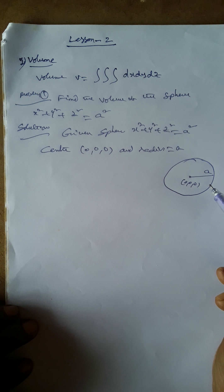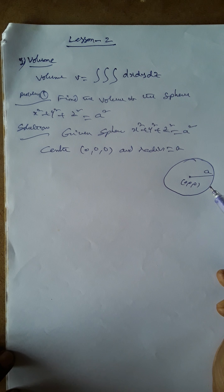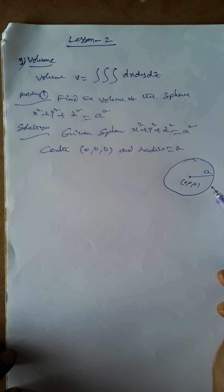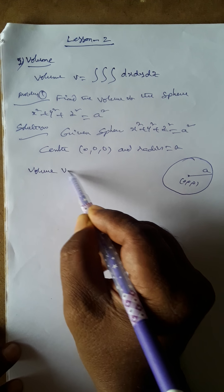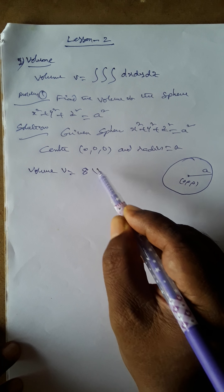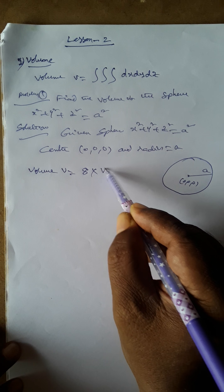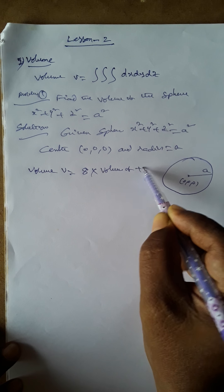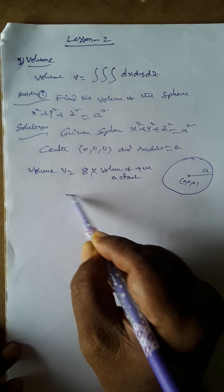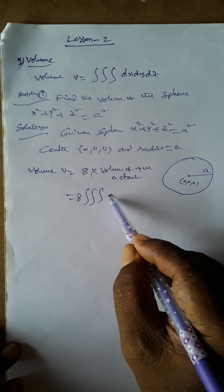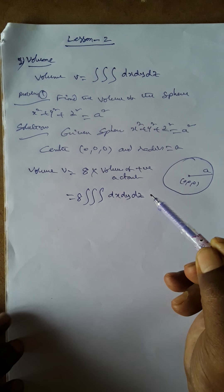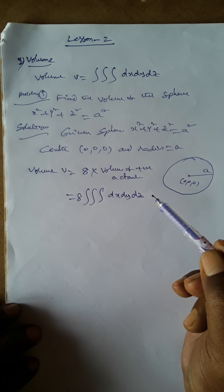Every sphere divides the space into eight equal parts; each part is called an octant. So we find the volume V as eight times the volume of the positive octant: V = 8 × triple integral dx dy dz.